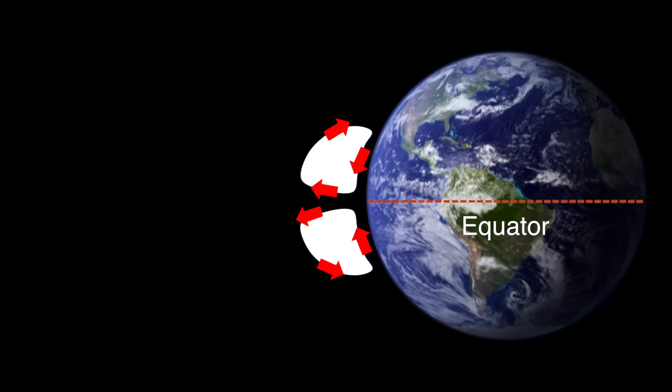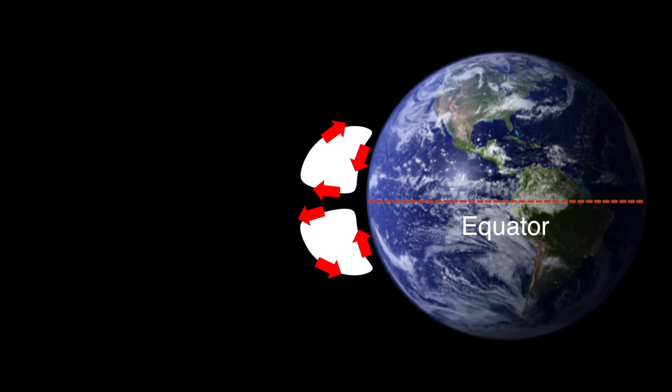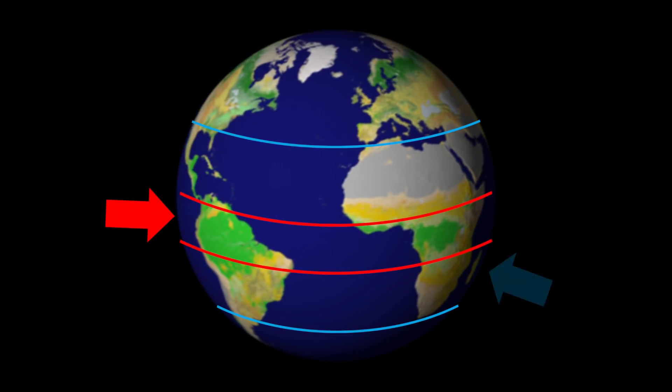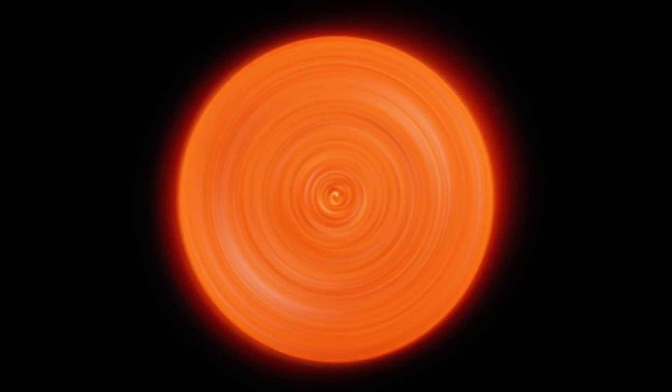Close to the equator, the circulation created by this redistribution of energy is called the Hadley circulation. This gives us tropical rainforests near the equator, and deserts on either side of these rainforests.